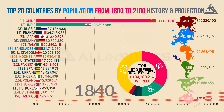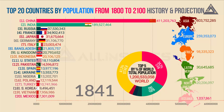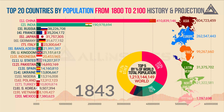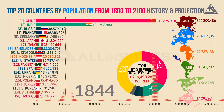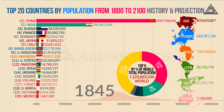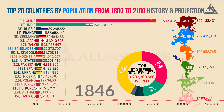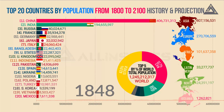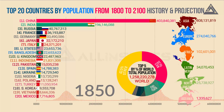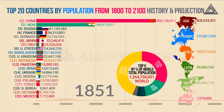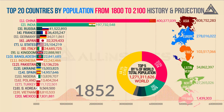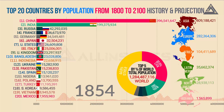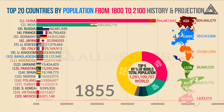The world population increased from 1 billion in 1800 to 7.7 billion today. 50 years ago the population growth rate was 2.2 percent per year, and now it has declined to 1.05 percent per year. The following factors are the main reasons for the change in population growth rate.